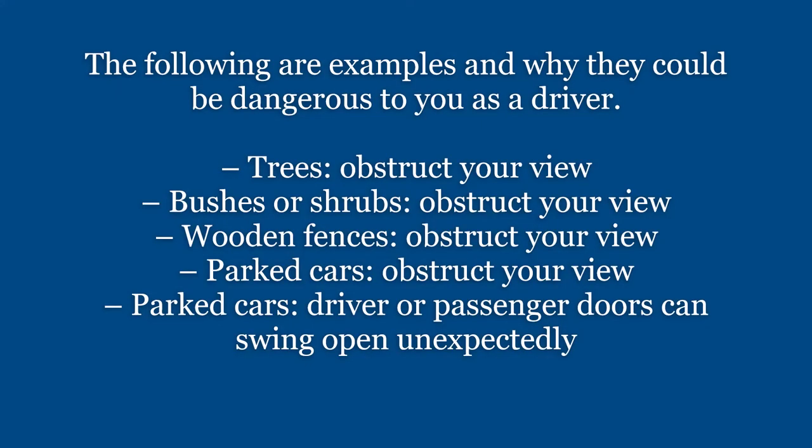Let's go over some examples. The following are examples and why they could be dangerous to you as a driver. Trees — they can obstruct your view. Bushes or shrubs — they can obstruct your view. Wooden fences — obstruct your view. Parked cars — they can also obstruct your view, and you can also mention that the driver or passenger doors can swing open unexpectedly.